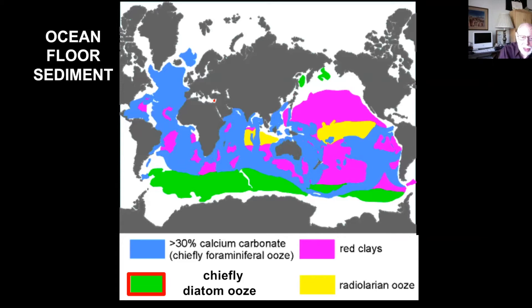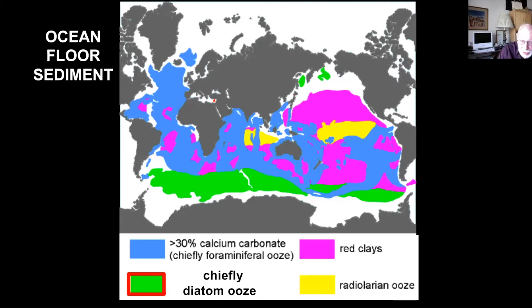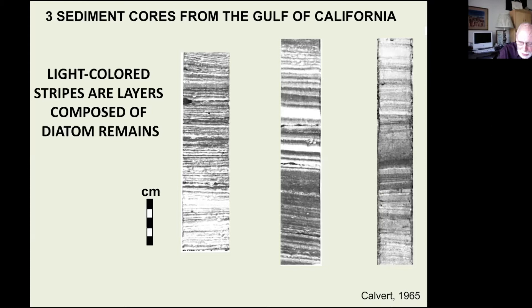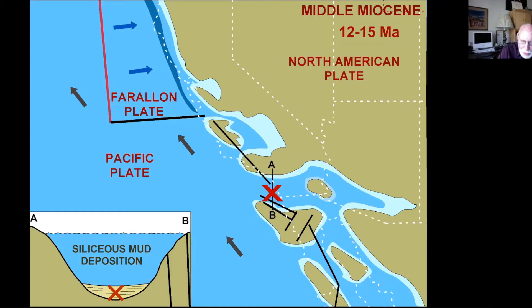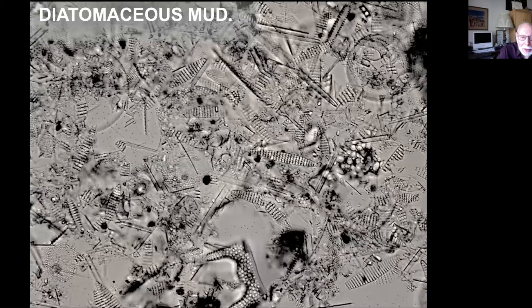Diatoms also prosper in marginal seas like the Gulf of California. These sediment cores show layering of the beds, and all those light-colored layers are diatom remains. Back about 12 to 15 million years ago during the Middle Miocene epoch, Southern and Central California was divided into a series of marginal seas. In these seas, diatoms abounded in tremendous numbers, settled to the bottom along with mud, and under pressure this was turned to rock — the Monterey formation — the light-colored, buff, layered rock you can see around Monterey.